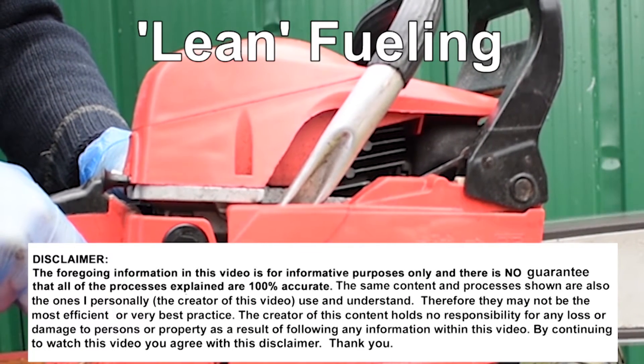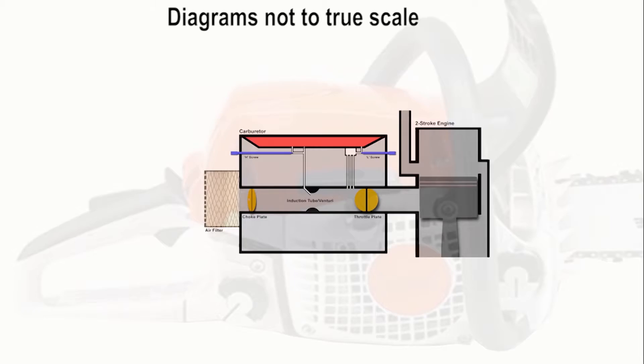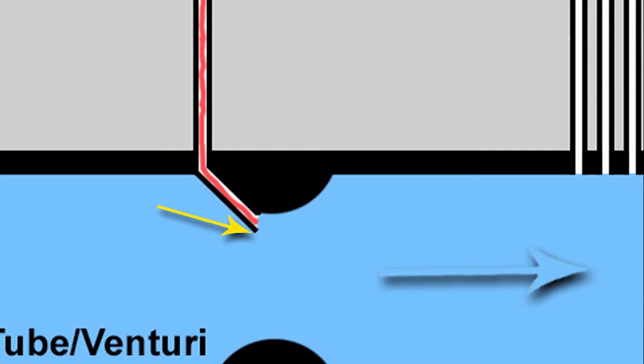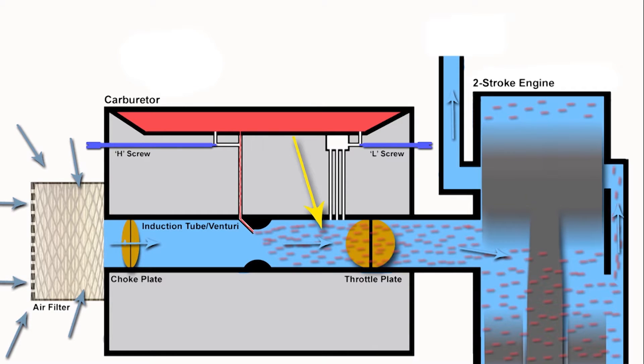To answer this successfully, we need to go through what the meaning of lean fueling actually is. To keep this simple, when the engine starts to move, air is drawn in through the induction tube and as it does so it draws out fuel from the main jet and it mixes with the air in a process called atomization. It's the ratio between the air and fuel within this mixture that's the key player here.